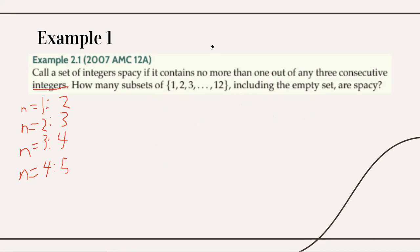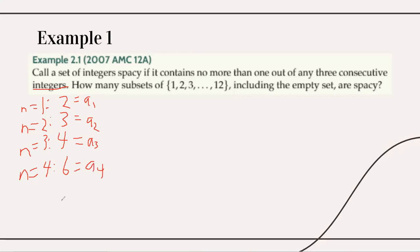Let a(n) be the answer for any value of n. So a(1)=2, a(2)=3, a(3)=4, a(4)=6. We want to find a(12). The idea is we'll write each a(n) in terms of the previous a values. The equation turns out to be: a(n) = a(n-1) + a(n-3). Let me explain how I arrived at this.